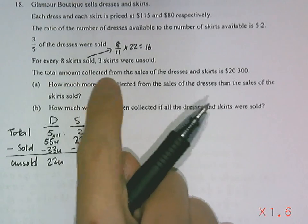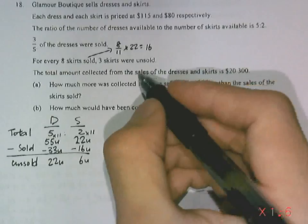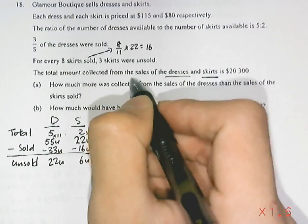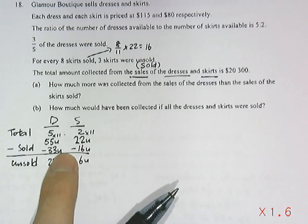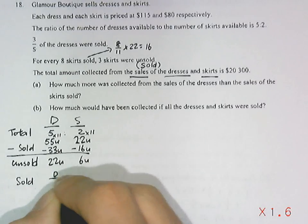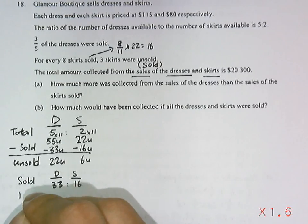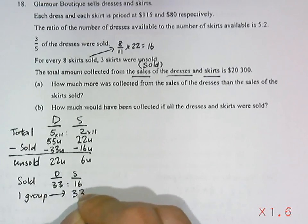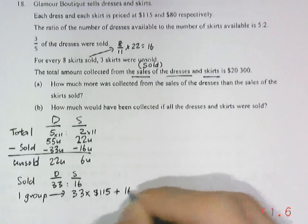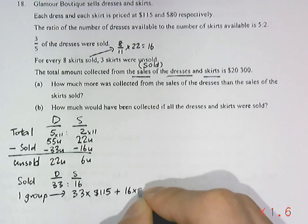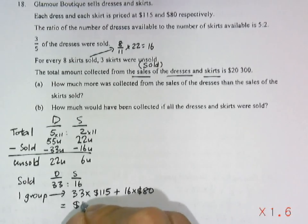It's further given that the total amount collected from sales of dresses and skirts is twenty thousand three hundred dollars. The ratio of dresses sold to skirts sold is thirty-three to sixteen. Grouping them, one group has thirty-three dresses at one hundred and fifteen dollars each and sixteen skirts at eighty dollars each, giving a total of five thousand and seventy-five dollars per group.